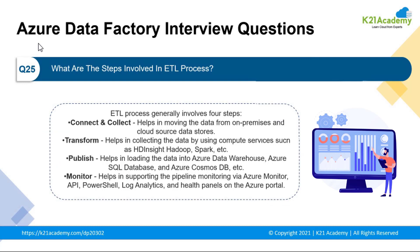Moving to our last question: what are the steps involved in the ETL process? There are four steps. First is connection and collection; after that we have transformation; after transforming the data we can publish it; and then we have different monitoring steps that help in supporting the pipeline via Azure Monitor, API, partial log analytics, and health panels on the Azure board.